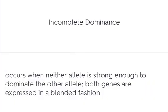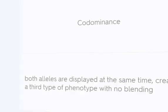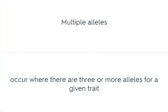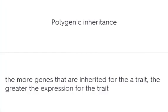Incomplete dominance occurs when neither allele is strong enough to dominate the other allele; both genes are expressed in a blended fashion. Codominance is when both alleles are displayed at the same time, creating a third type of phenotype with no blending. Multiple alleles occur where there are three or more alleles for a given trait. Polygenic inheritance: the more genes inherited for a trait, the greater the expression of that trait.